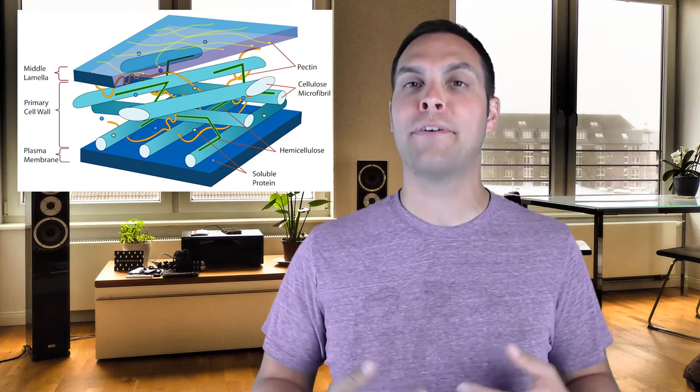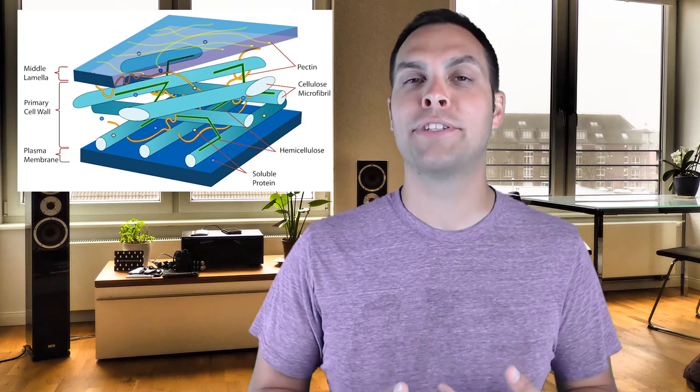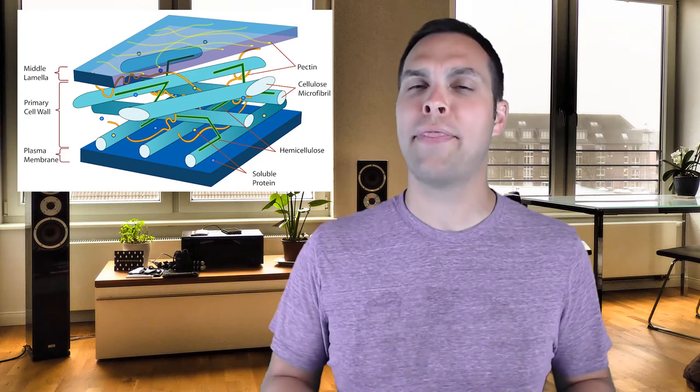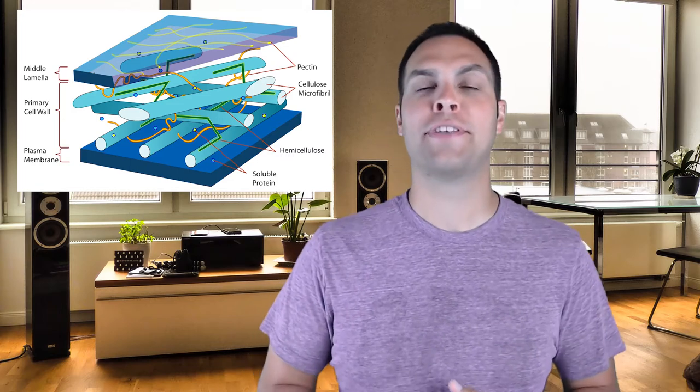Despite cellulose being made of thousands of glucose molecules — and glucose being breakable by almost any cell on Earth — very few organisms can actually break down cellulose. Animals lack the enzyme cellulase. So how do herbivores like cows and sheep survive eating mostly grasses with high cellulose content? The answer is simple: in the guts of these animals live microbes — bacteria and archaea — that produce cellulase, breaking cellulose down into glucose the animals can absorb. This is a symbiotic relationship.